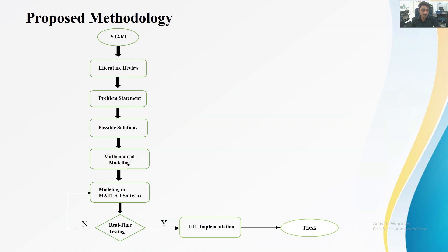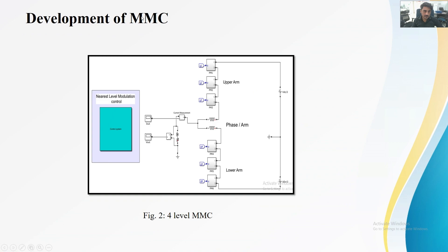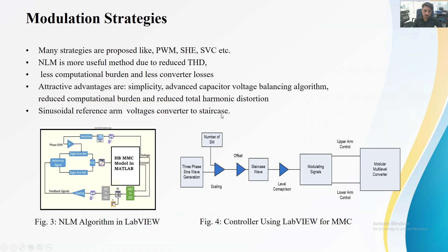This is the proposed methodology which we followed throughout the project. This is the circuit diagram of the MMC in MATLAB that we made — you can see there are two arms connected through an inductor. Different modulation strategies have been used in different literature, but we used the NLM technique which is more useful due to reduced THD, less computational burden, less converter losses, simplicity, and an advanced voltage capacitor balancing system.